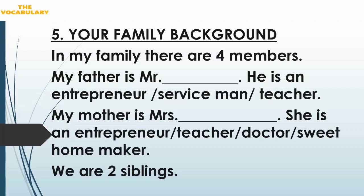Next point is your family background. Yahan aapko zyada detail nahi deni hai — bahut precise way mein apne family ke baare mein batana hai. Like: 'In my family there are four members. My father is Mr. ABD' — unka name mention kar denge. After that, unka occupation batana hai — like 'He is an entrepreneur' means 'He is a businessman,' or 'He is a serviceman, teacher, farmer.' My mother is Mrs. ABD — she is a teacher, doctor, or 'she is a sweet homemaker' agar woh grihani hain. Aur apne siblings ke baare mein: 'We are three siblings' ya jitne bhi aap bhai behen hain, woh number mention kar denge.